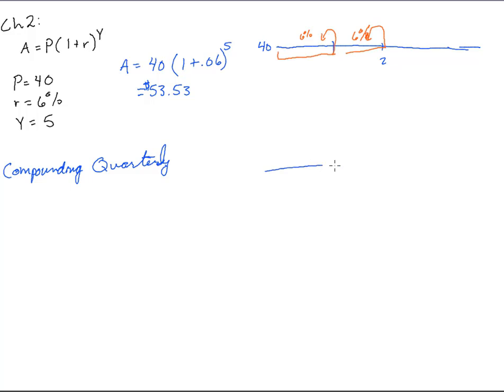So, in a timeline like this, if we start with $40, here's the end of the first year, here's the end of the second year, here's the end of the third year, what we're going to do now is instead of this 6%, which happens during the whole year, we are now going to chop it into one, two, three, four pieces.